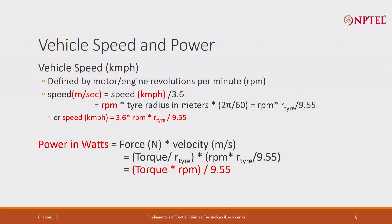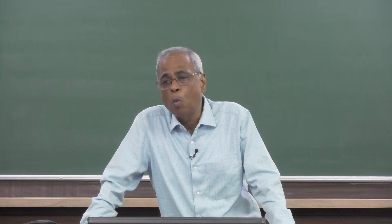Power is in watts. One watt equals one Newton times one meter per second — force multiplied by velocity. Since force equals torque divided by tire radius, and velocity equals RPM times tire radius divided by 9.55, the tire radius cancels out. Therefore, power in watts equals torque in Newton meters times RPM divided by 9.55. Power in kilowatts is one-thousandth of power in watts. These unit conversions will be used frequently throughout the course.